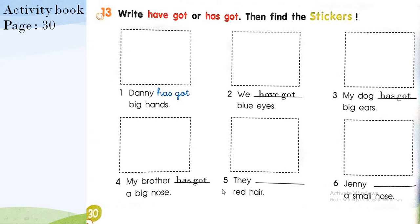Number four: My brother has got a big nose. Number five: They have got red hair, and Jenny has got a small nose. Very good, dear students! Now for the second part — find the stickers. Go to the last page of your activity book, find the stickers for module 5, and place them. Pause the video, read the sentence, and try to find the suitable sticker.